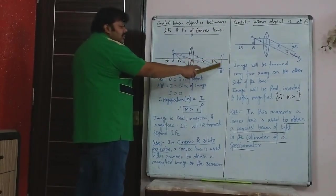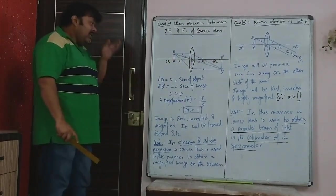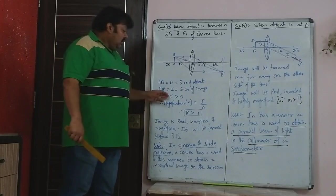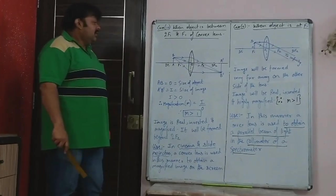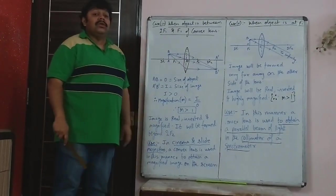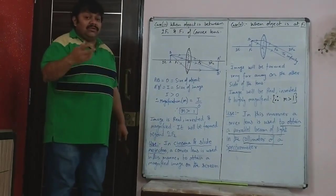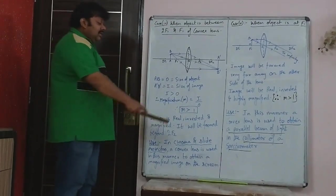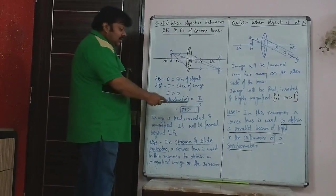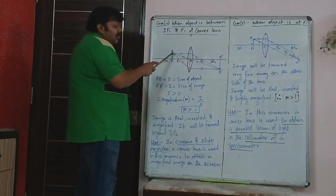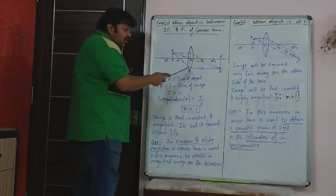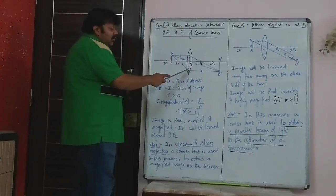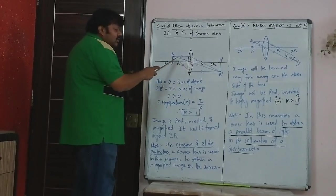The size of the image is much more than the size of the object, so magnification is greater than one. Magnification is the height of the image upon the height of the object. It is also equal to the image distance, denoted by V, upon the object distance, denoted by U. All distances are measured from the optical center.